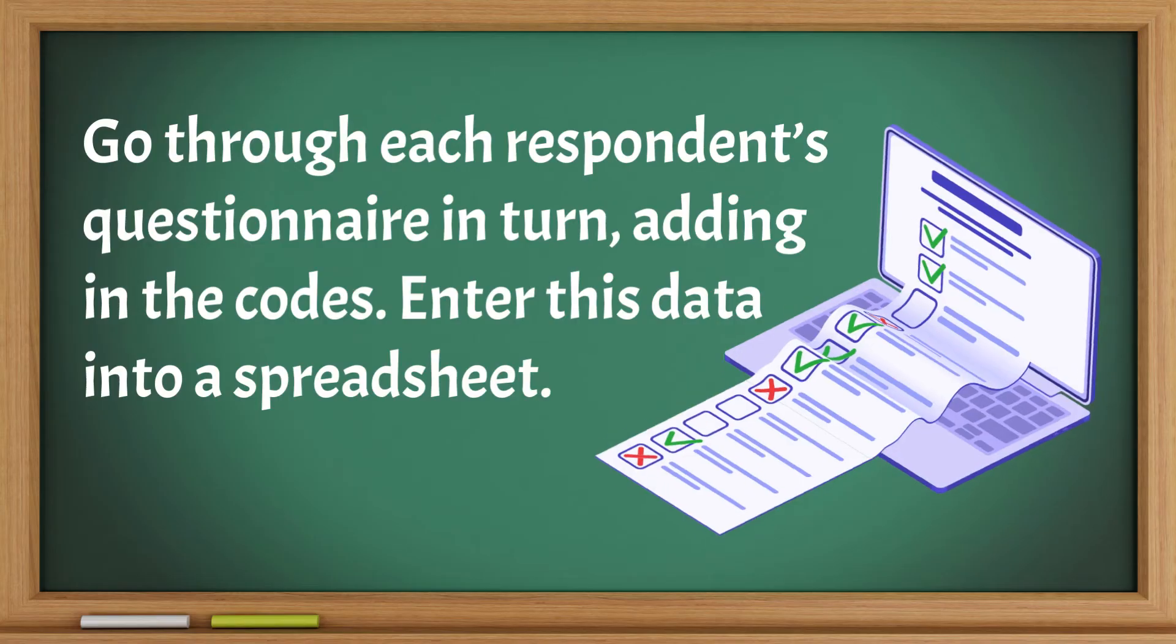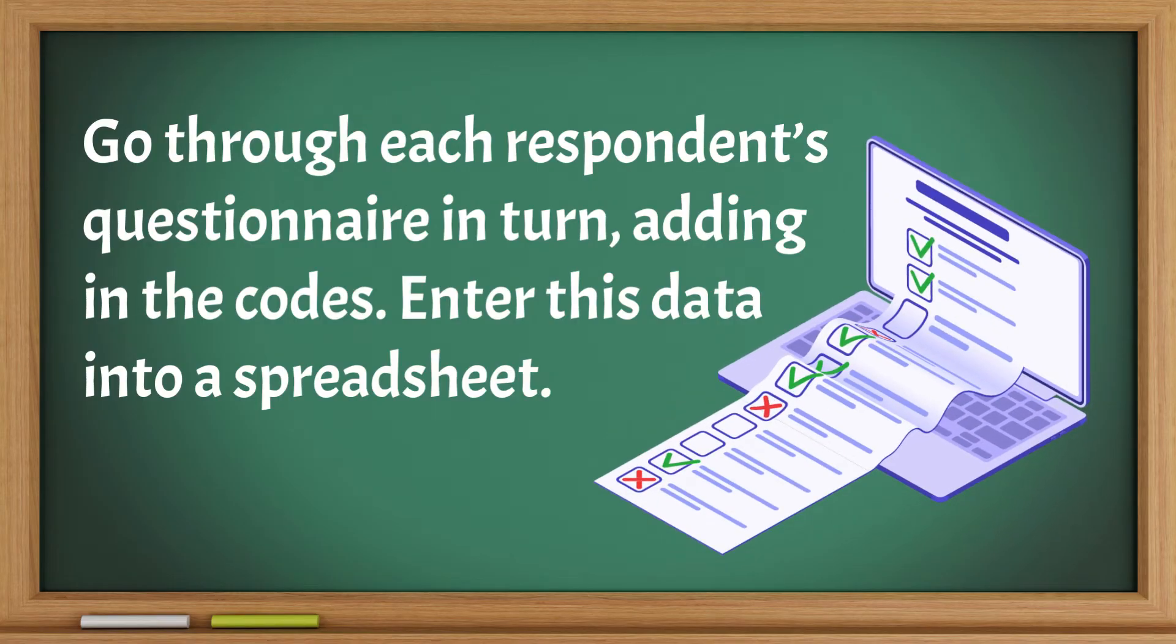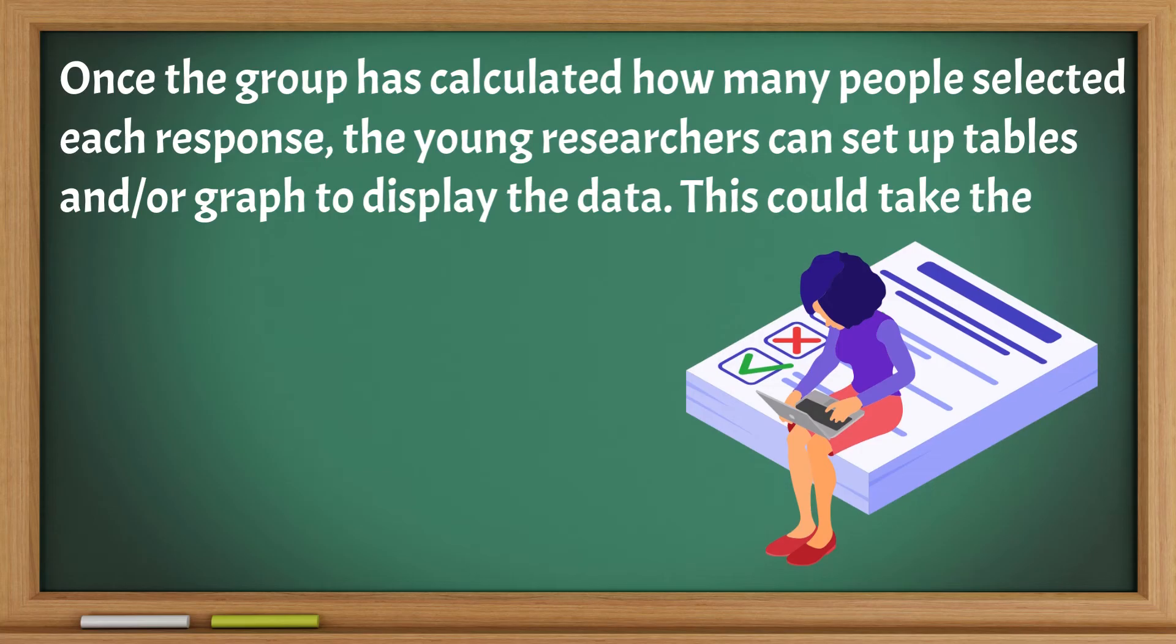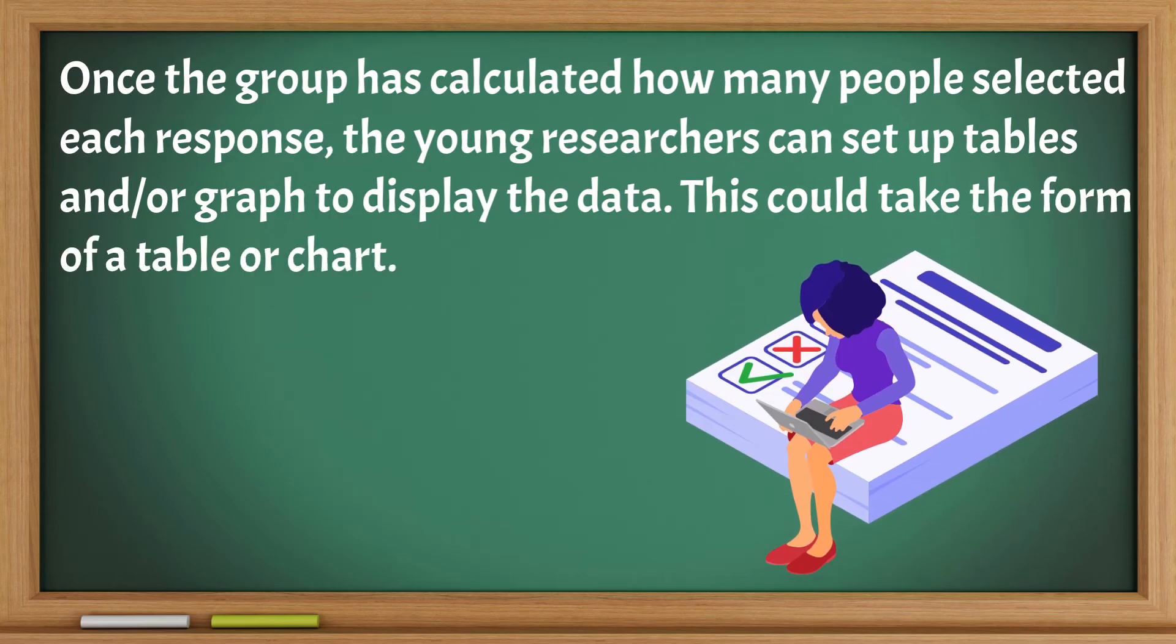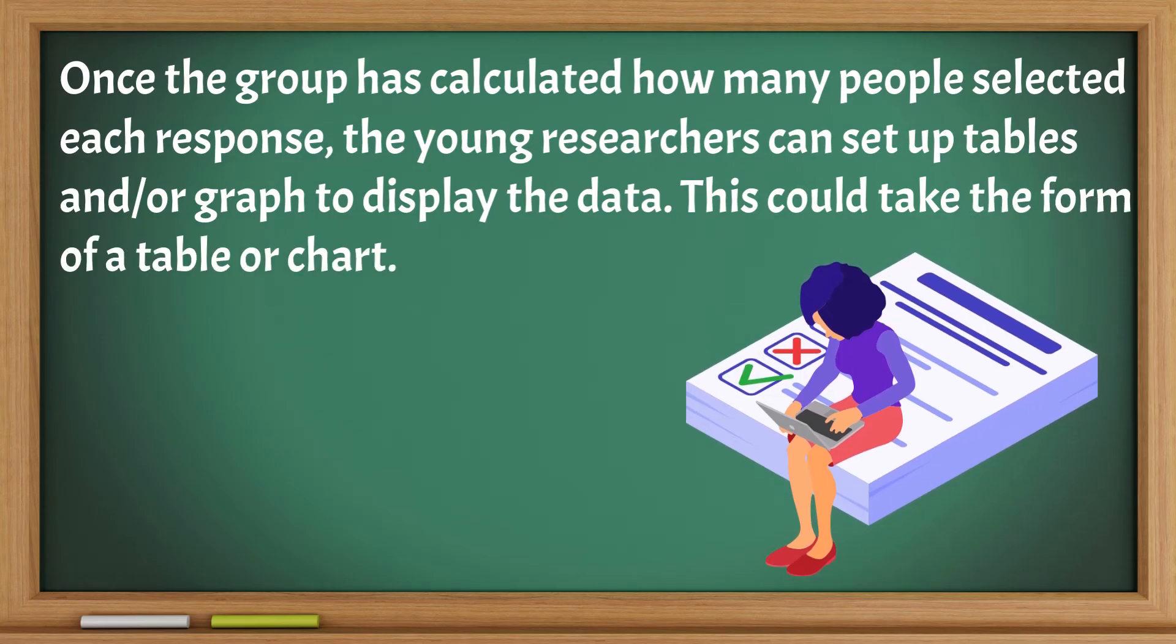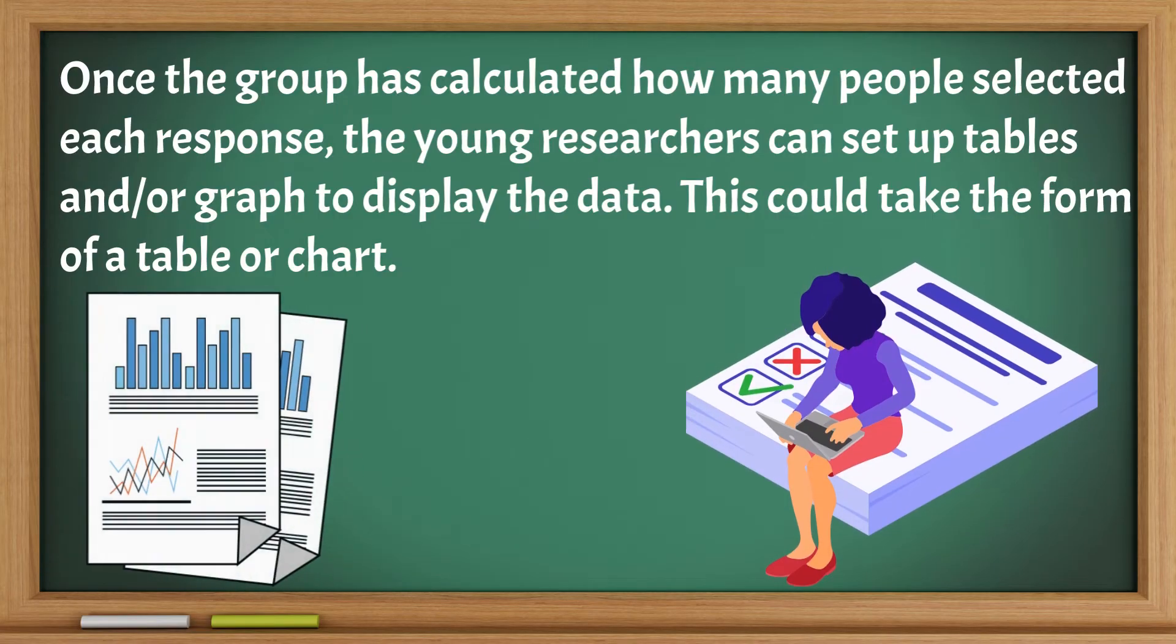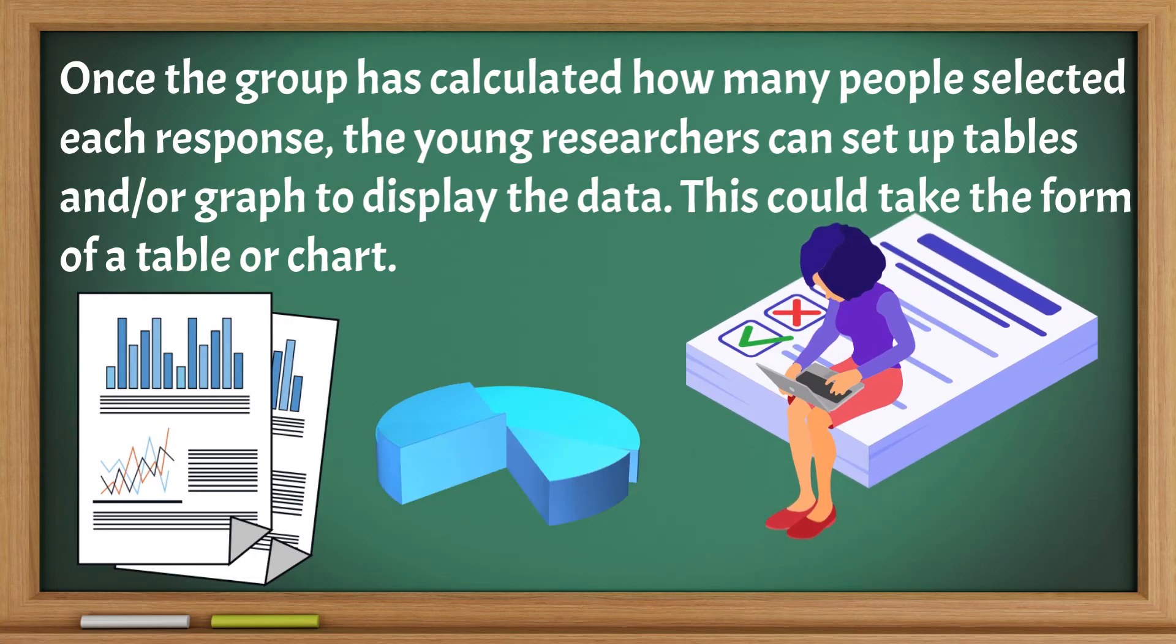Go through each respondent's questionnaire in turn, adding in the codes. Enter this data into a spreadsheet. Once the group has calculated how many people selected each response, the young researchers can set up tables and or graphs to display the data. This could take the form of a table or chart.